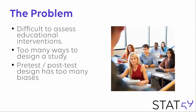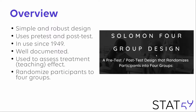So what is the problem? It is very difficult to assess educational interventions — there are simply too many ways to design a study, and pre-test post-test designs can have too many biases. The Solomon 4 group design can be a solution. It is a simple and robust design that uses a pre-test and a post-test and has been in use since the 1940s.